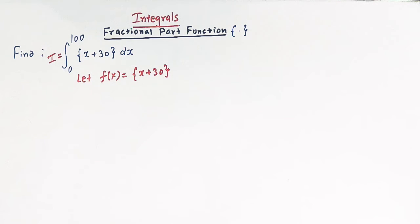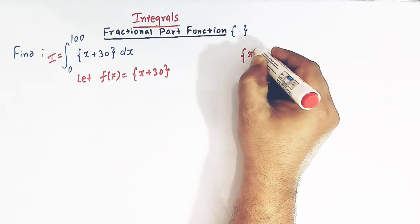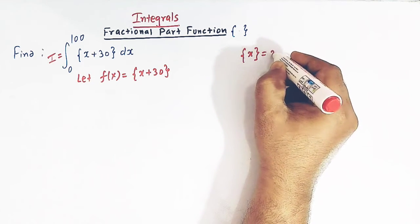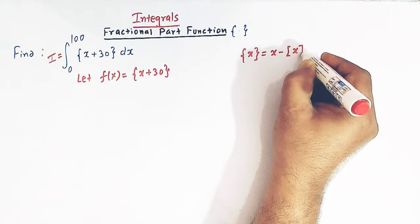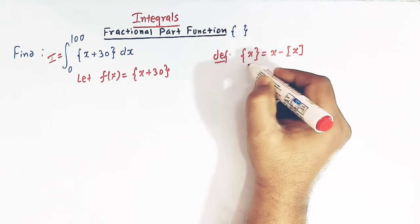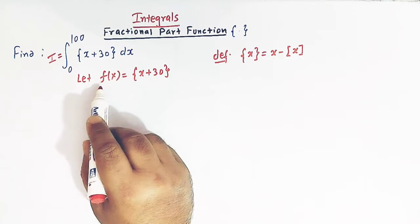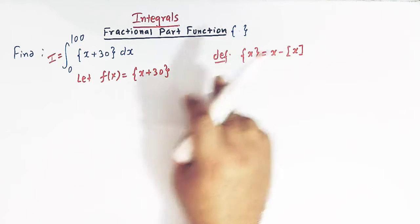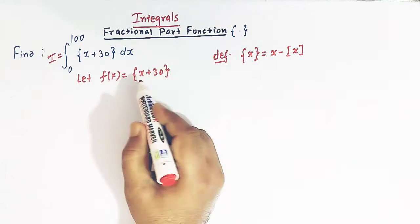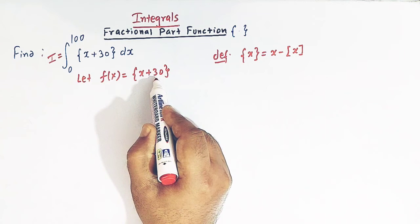Now let us recall the relationship between a fractional part function and greatest integer function. We know that the fractional part of x is defined as x minus the greatest integer of x. This is the definition of the fractional part of x. So if we apply this definition to f of x, then for x we have x plus 30.